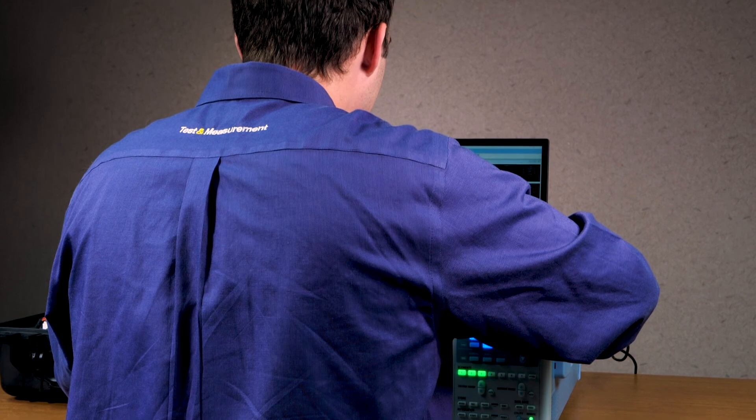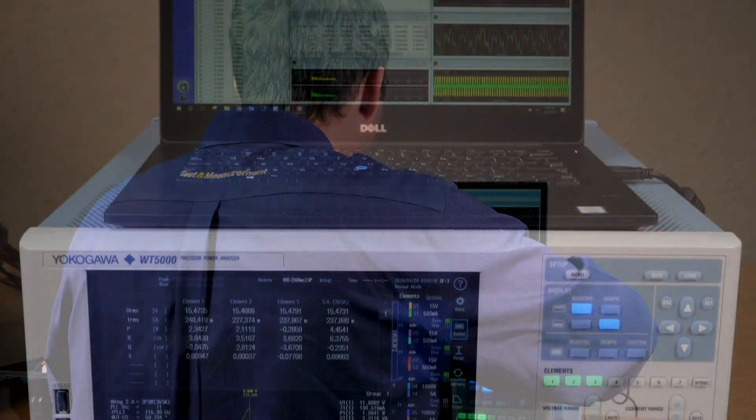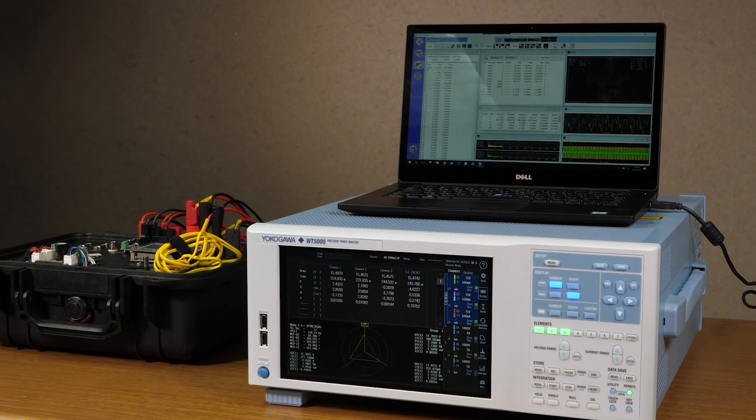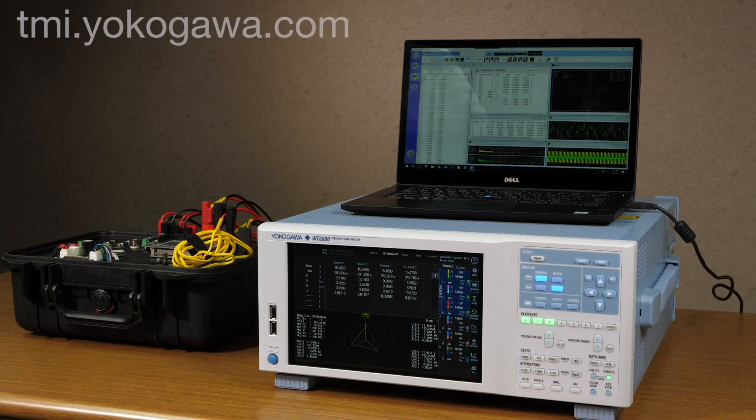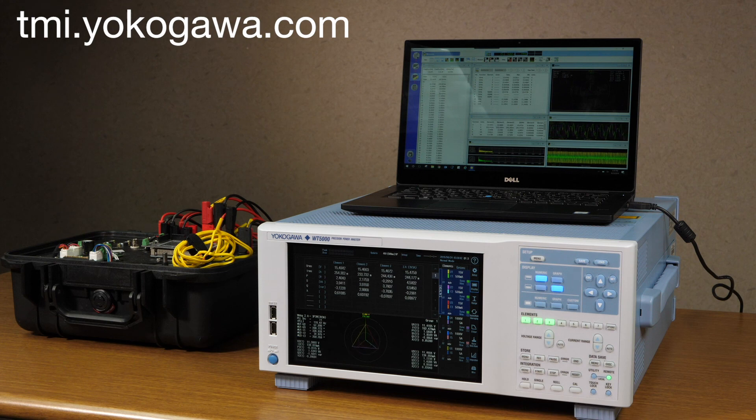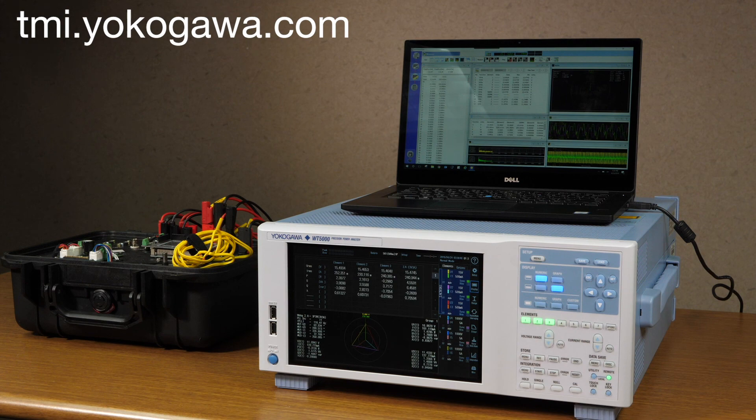I hope that you find this video helpful in setting up your WT5000 Precision Power Analyzer to measure individual phase powers in both a Y-connected and delta-connected system. Remember, the setup for other Yokogawa power analyzers with the delta computation function will be very similar. For more information or if you have any questions, please visit tmi.yokogawa.com, and don't forget to click subscribe to join our YouTube channel. Thank you for watching.